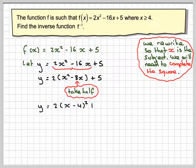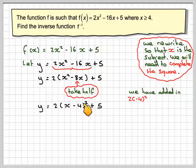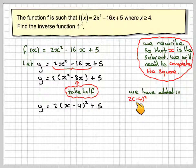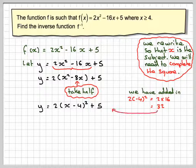In doing this process, we've still got the plus 5. In doing this process, we have actually added in a number — this is what's called completing the square. We've added in minus 4 squared times 2. If you expand that, you'll see we have added 2 × (-4)² = 2 × 16 = 32. So if we've added 32, we need to subtract 32 here.